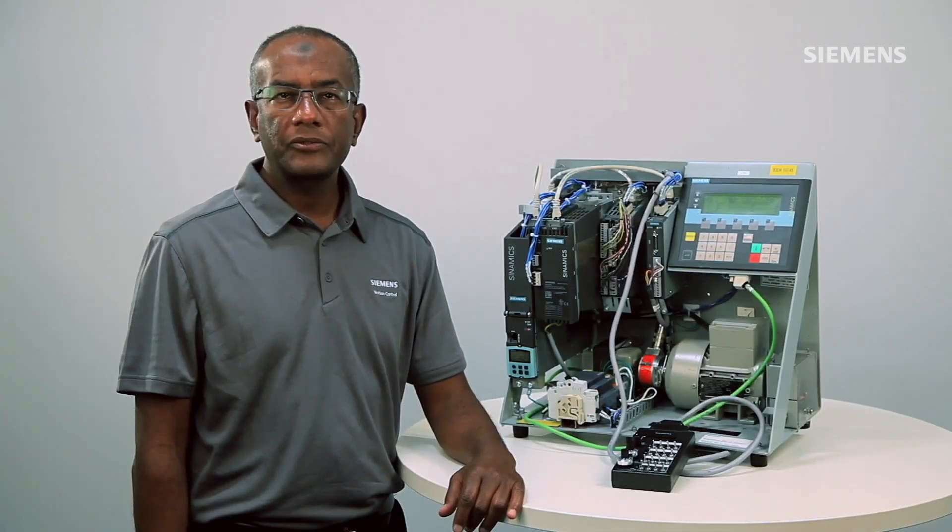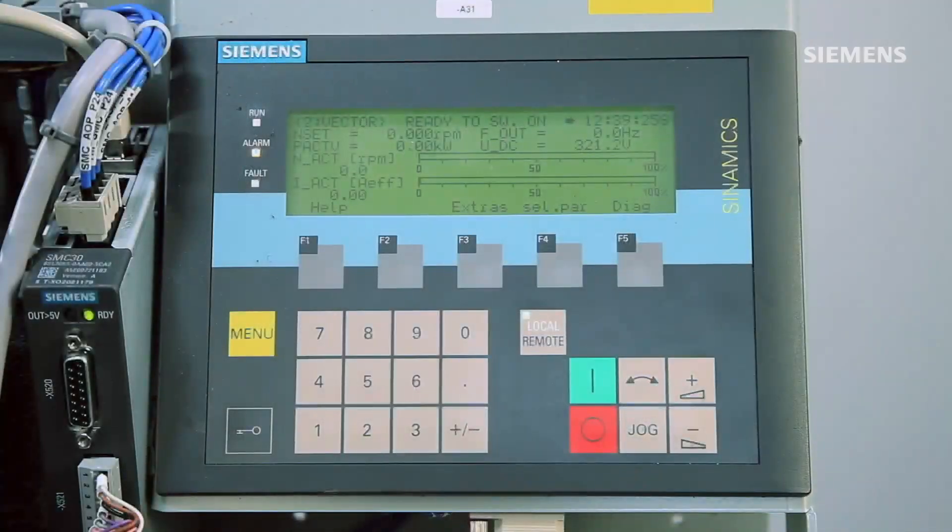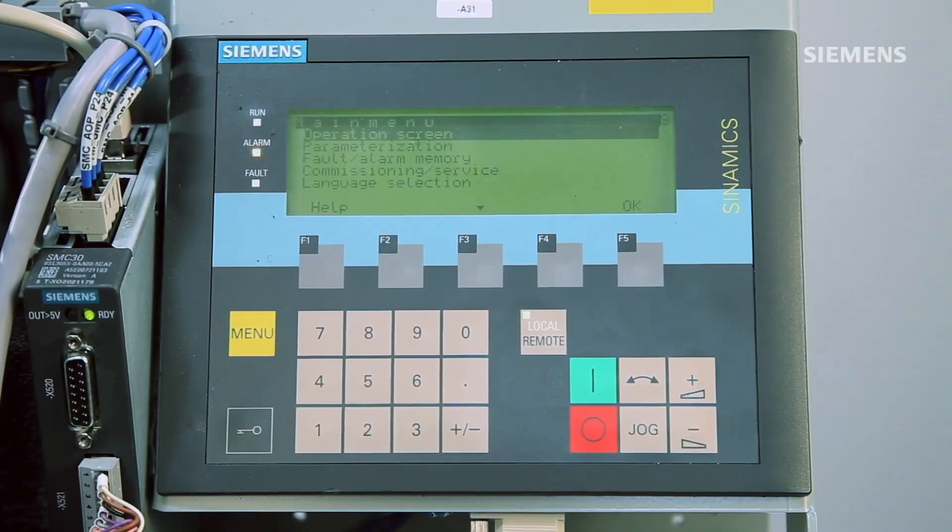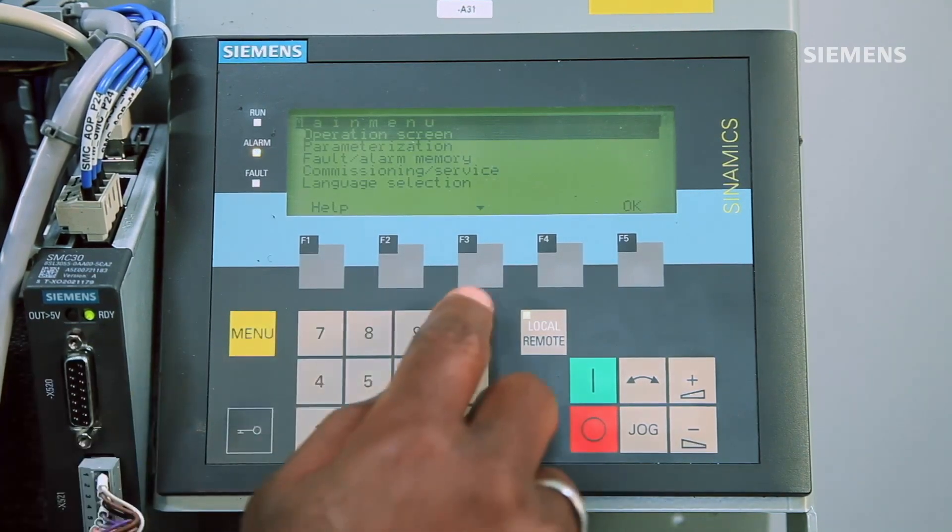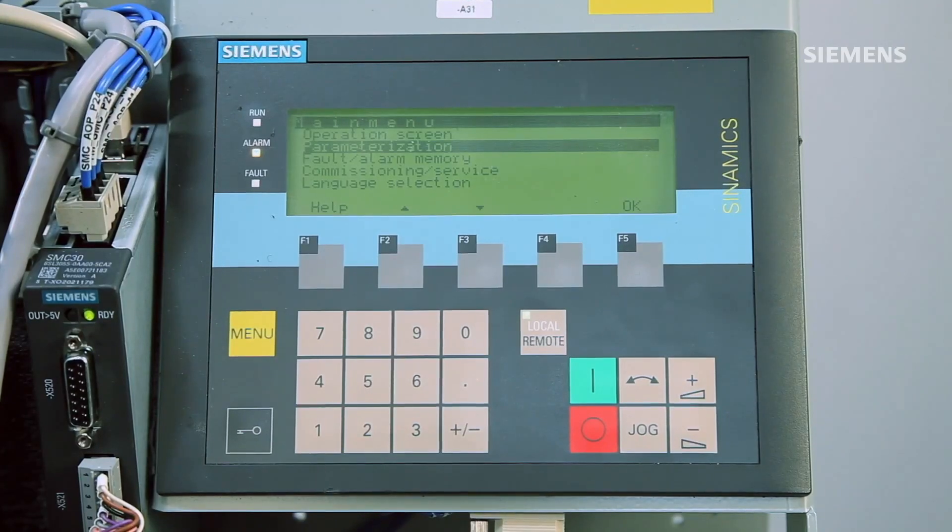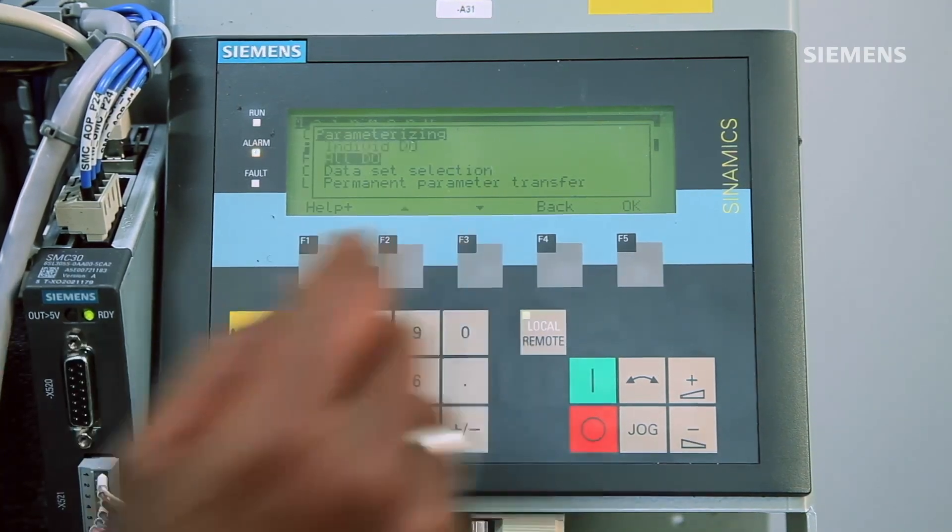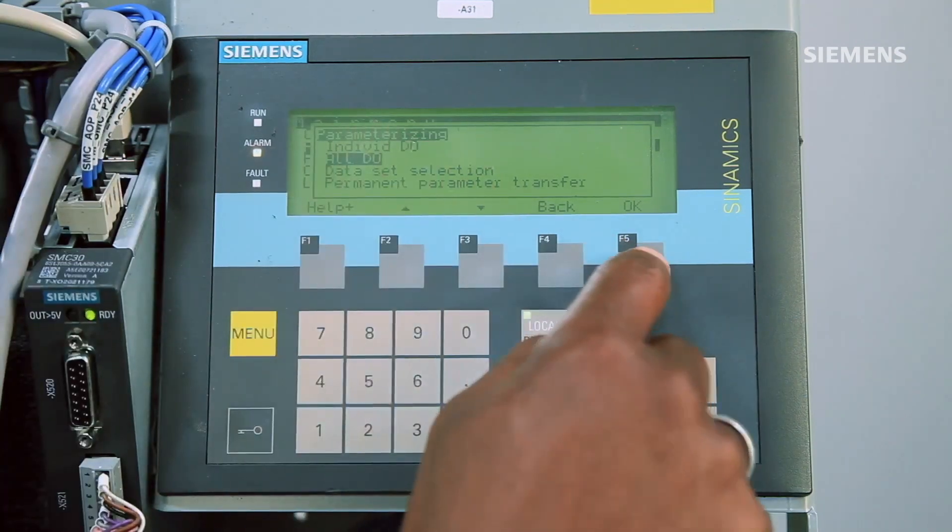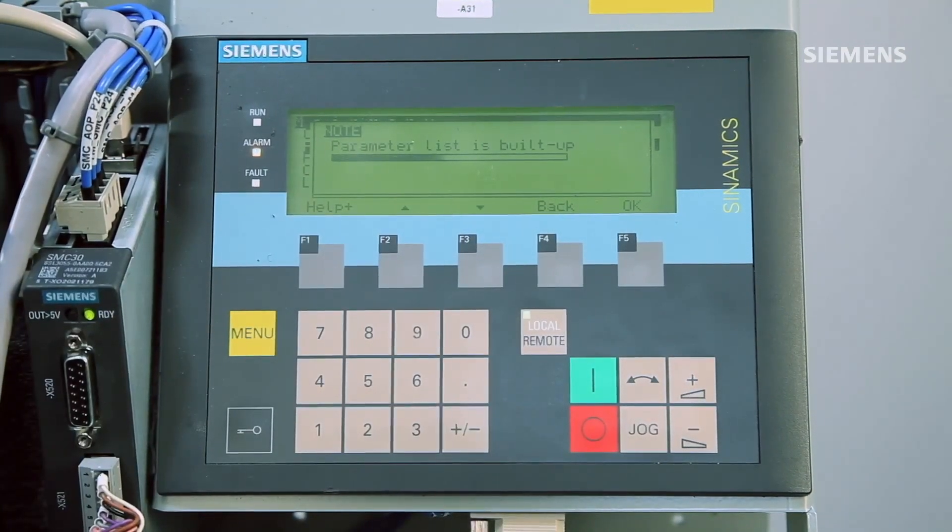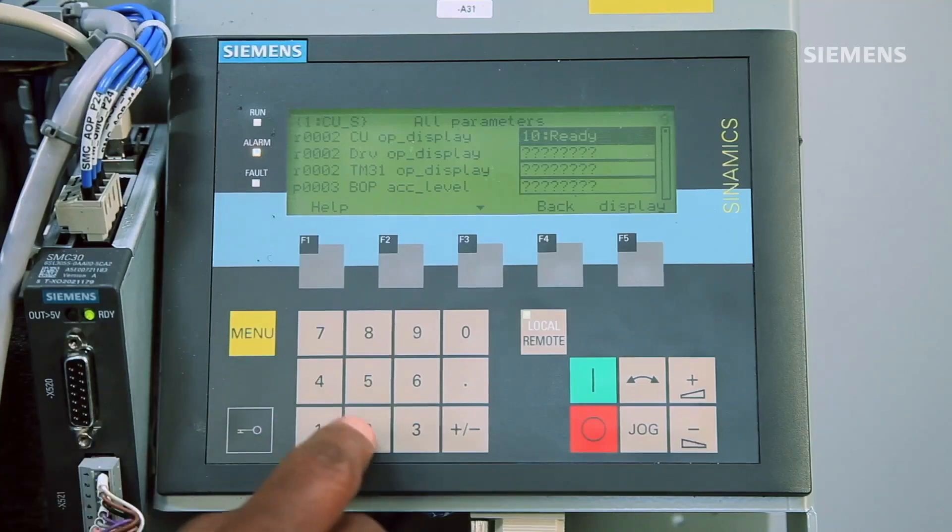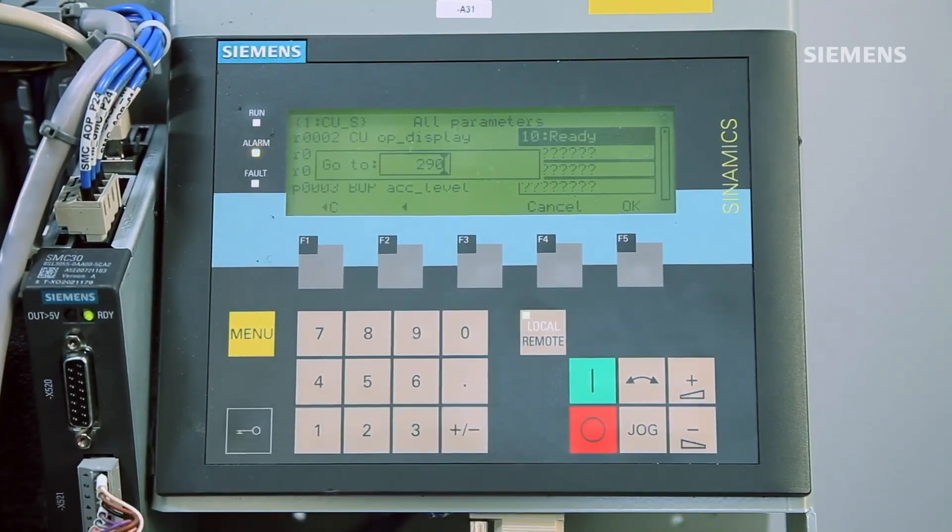To access the parameter to set up this overload avoidance, first select the yellow menu button to access the main menu. Using the arrow down key, select parameterization and then hit OK. Next we need to select all DO which means all drive objects and again hit OK. So now we have a list of all parameters from all the drive objects. Using the keypad, enter 290 and hit OK for parameter 290.